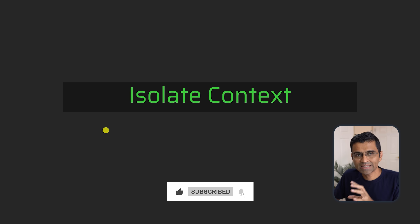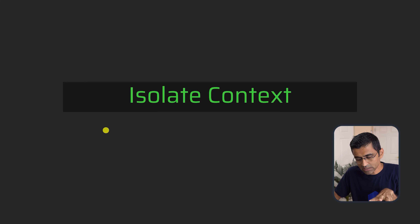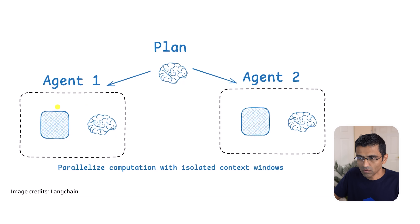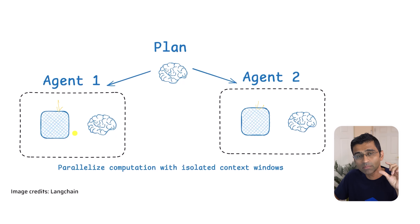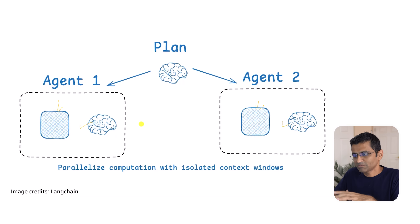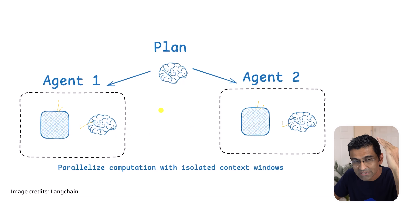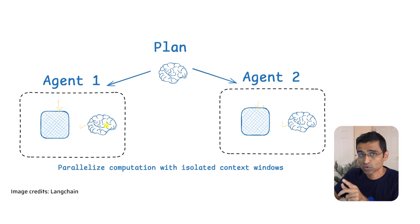The fourth strategy is isolating the context. If you're working on a big task and building a multi-agent system, you can divide the task across two agents. This reduces the individual context window for each agent — each agent's context will not only be shorter but also more relevant and higher quality. However, building multi-agent systems comes with risks. You have to make sure you can actually parallelize the work, because in some cases agent two relies on the output from agent one. Based on the situation, you can use the isolating context approach.